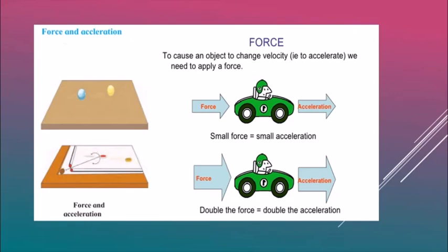The velocity of the coin decreases due to the force of friction, which causes it to stop. When talcum powder is applied, friction is reduced and the coin moves faster for longer, but still stops eventually. If the friction between the carom board and the coin is reduced further, the coin keeps moving longer. This means that if no force of friction acts on a moving body, it keeps moving with a constant velocity.